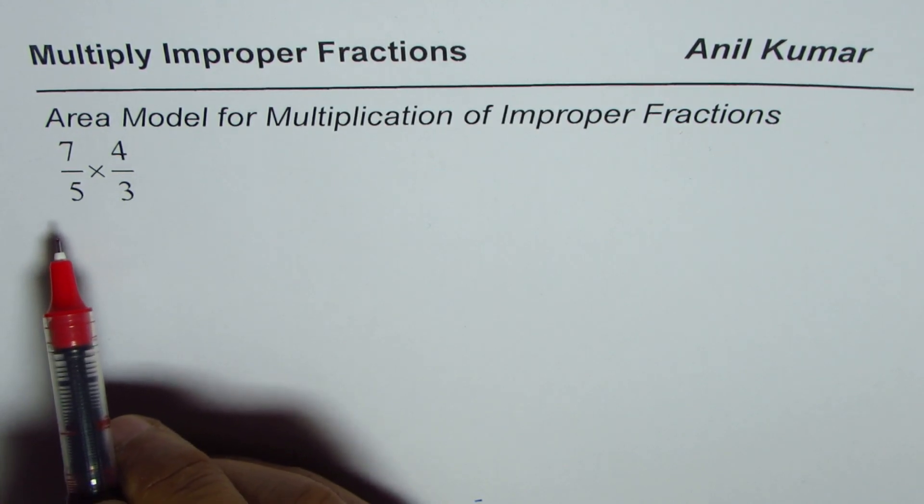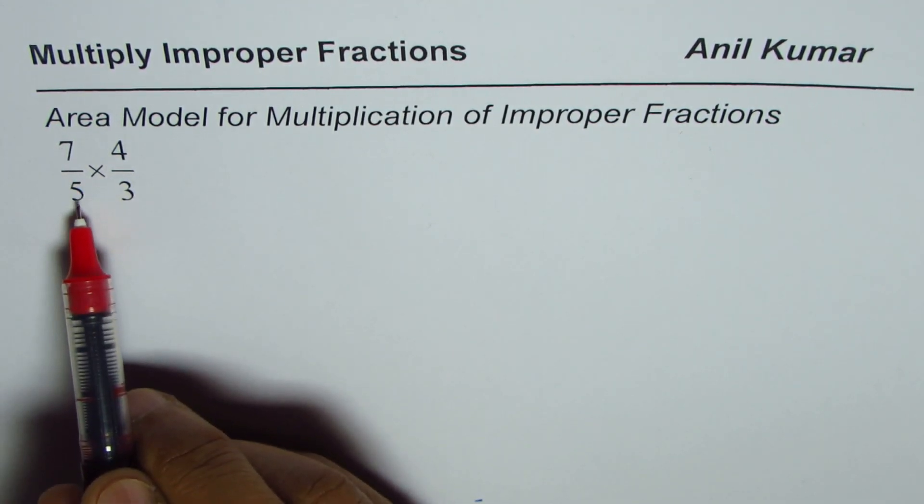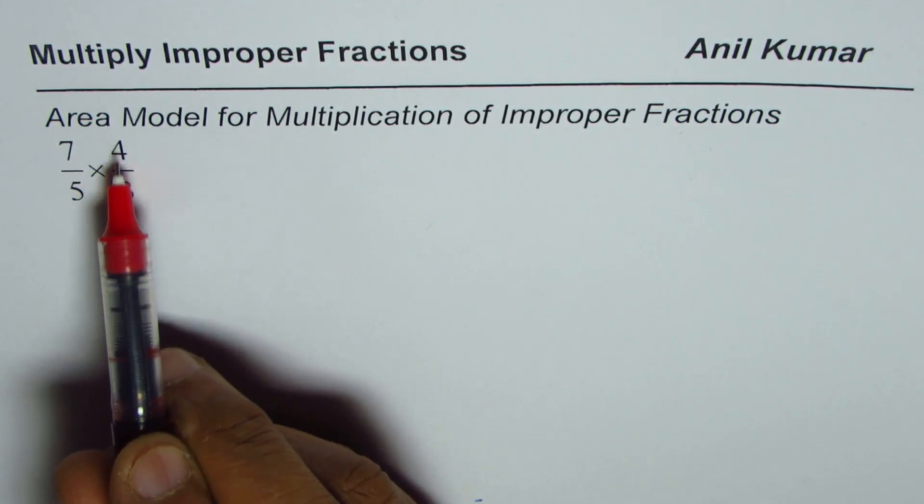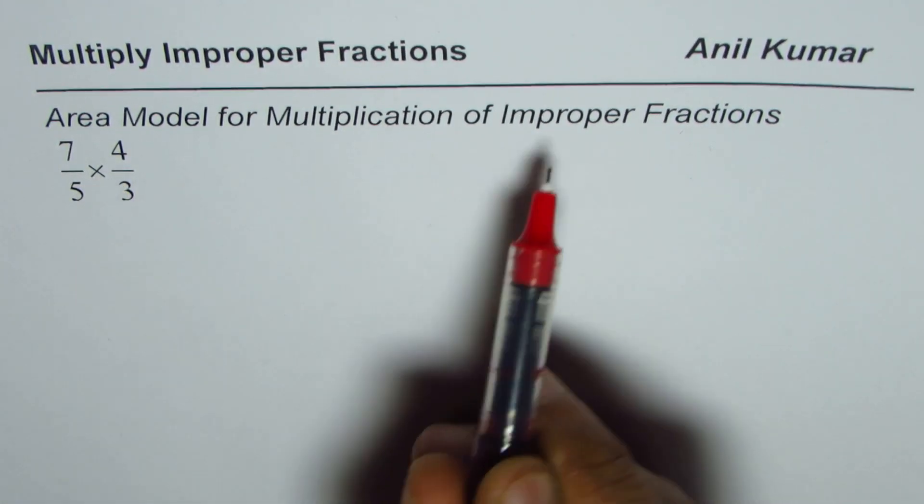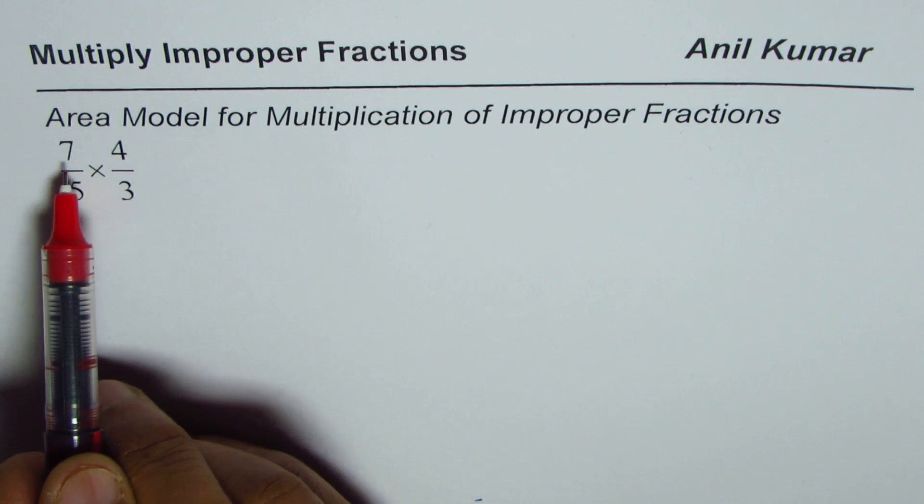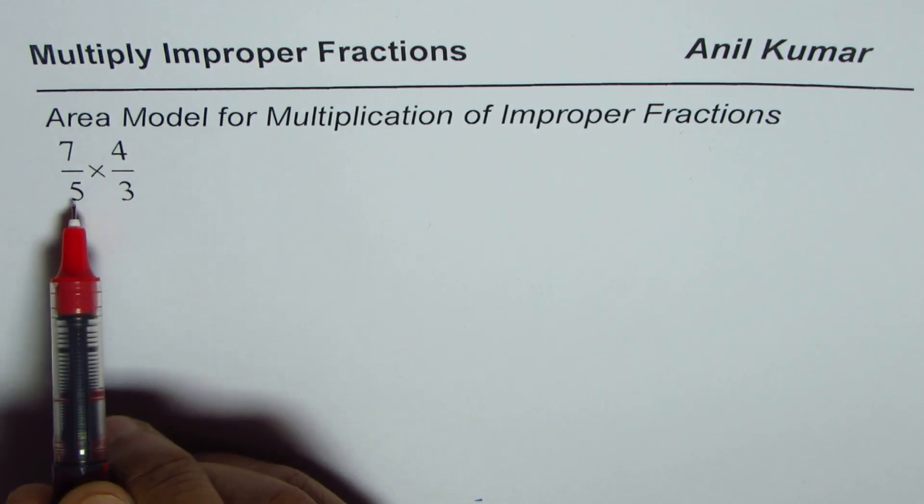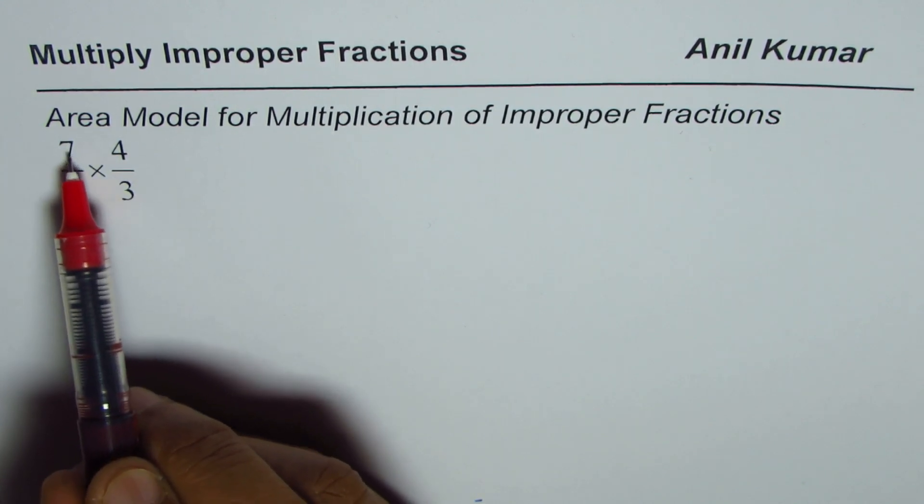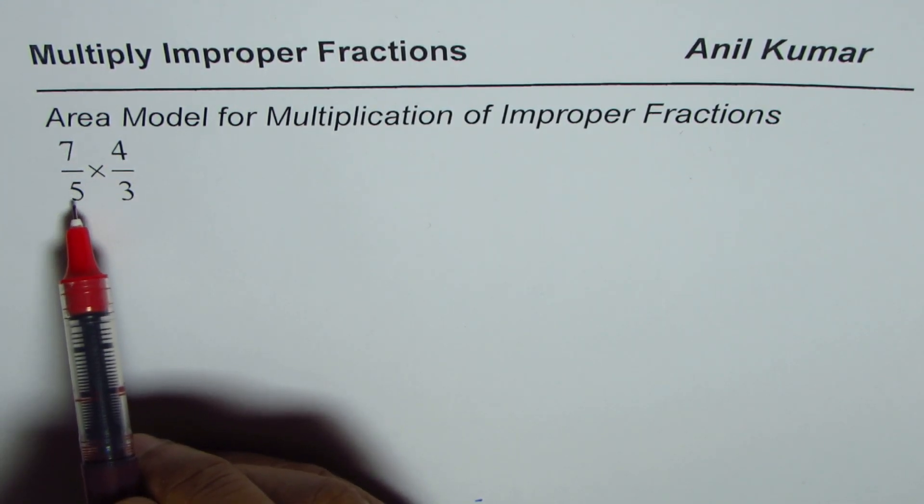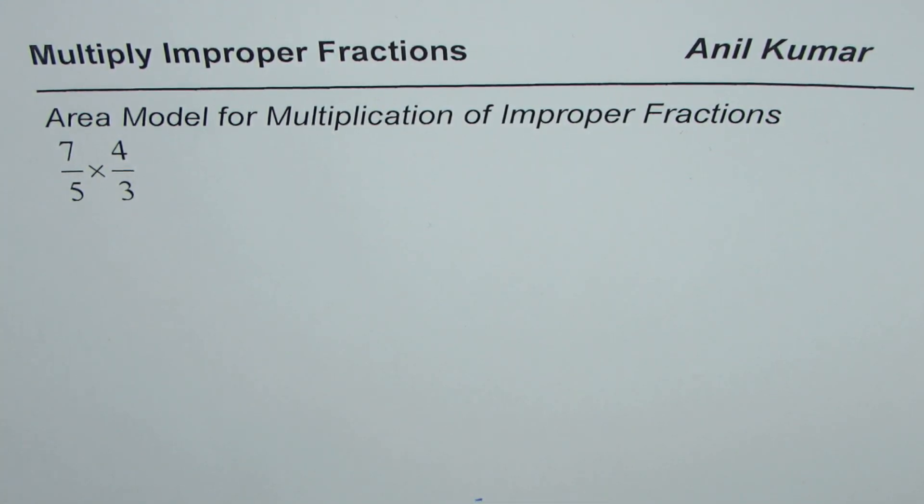Here is an example: 7 divided by 5 times 4 over 3. These two fractions are improper fractions since the numerator is higher than the denominator. So we have to take 7 parts out of 5. It is improper fraction since the numerator is greater than the denominator.